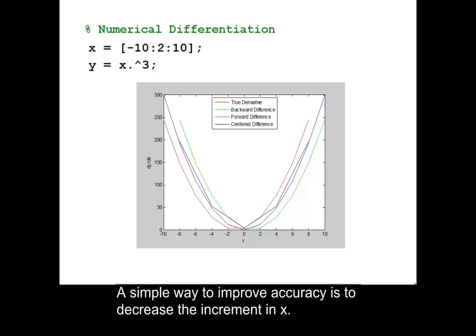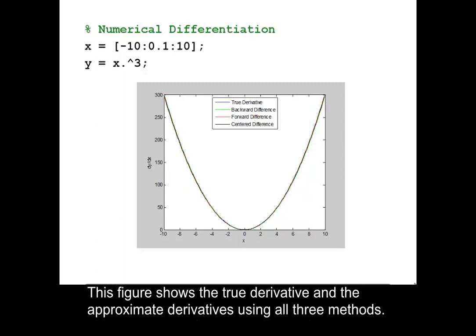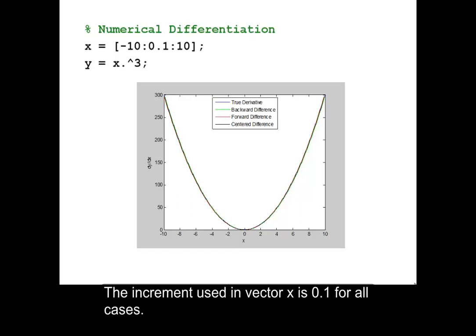A simple way to improve accuracy is to decrease the increment in x. This figure shows the true derivative and the approximate derivative using all three methods. The increment used in vector x is 0.1 for all cases.